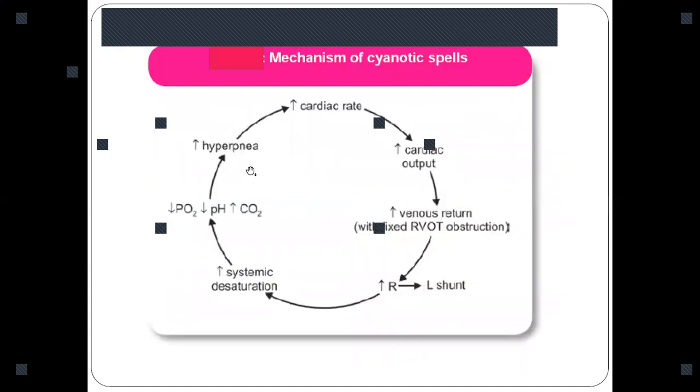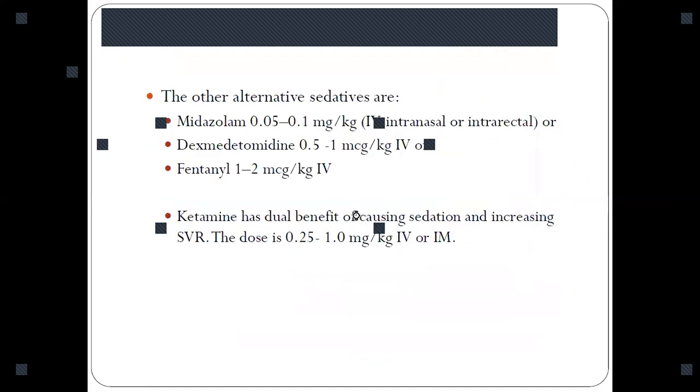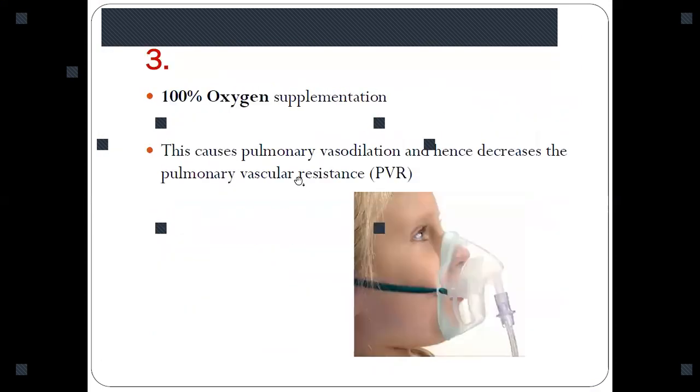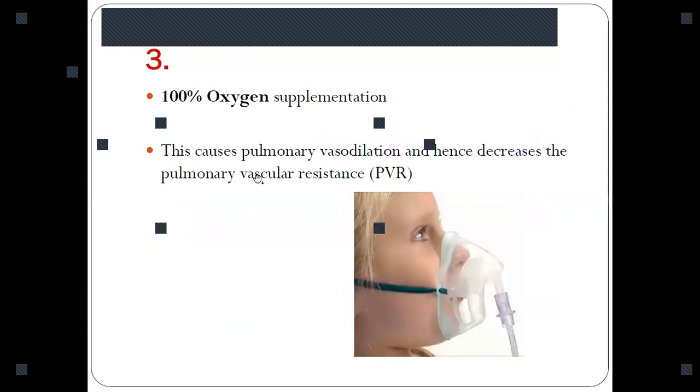When hyperpnea is reduced, all these factors like increased cardiac rate, increased cardiac output, increased venous return will not occur, and thus it decreases the right to left shunt. Other alternatives to morphine are midazolam, fentanyl, or dexmedetomidine.